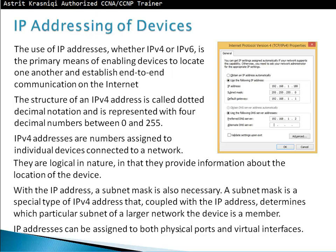With the IPv4 address, a subnet mask is also necessary. A subnet mask is a special type of IPv4 address that, coupled together with the IPv4 address, determines which particular subnet or larger network the device is a member of. IP addresses can be assigned to both physical ports and virtual interfaces. The subnet mask explains which part of the IPv4 address is the network and which part is the host.